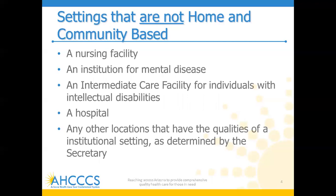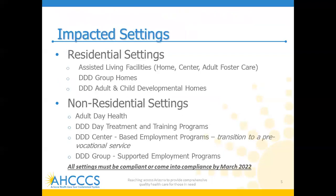Settings that are not home and community-based and do not have to comply with the HCBS rules include nursing facilities, institutions for mental disease, intermediate care facilities for individuals with intellectual disabilities, hospitals, or any other locations that have the quality of an institutional setting. Settings that do have to comply include HCBS residential settings such as assisted living facilities, assisted living homes, centers, adult foster care, DD group homes, DD adult and child developmental homes, and non-residential settings including adult day health, DD day treatment and training programs, DD center-based employment programs, and DD group supported employment programs. All of these settings must be compliant by March of 2022.